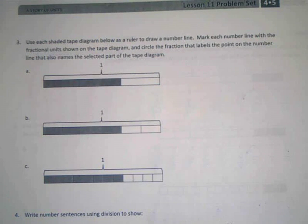Alright, please keep your voices off for me so we can keep scooching through this. Use each shaded tape diagram below as a ruler to draw a number line. Mark each number line with the unit fractions shown on the tape diagram and circle the fraction that labels the point on the number line that also names the selected part of the tape diagram. So same idea as what we were doing earlier, but this time we're just drawing the number line.